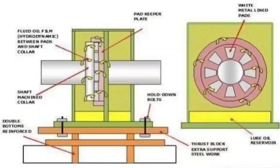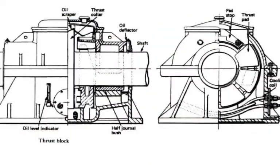The casing of the independent thrust block is in two halves, joined by fitted bolts. Thrust pads, which pivot around the thrust collar surface, carry the thrust load. The pads are mounted in holders and coated with white metal. An oil deflector deflects the oil from the thrust collar and directs it onto the top cover.